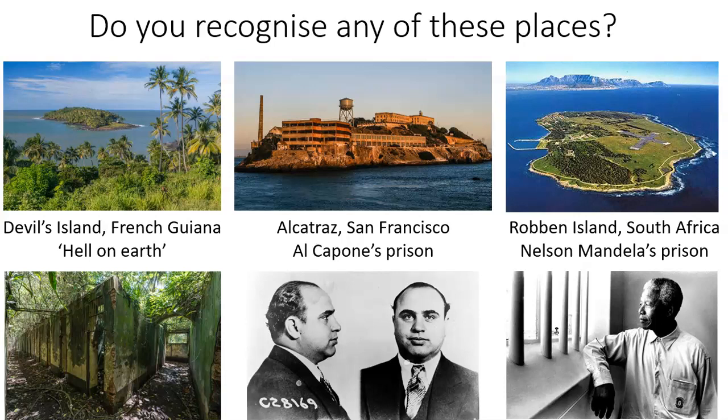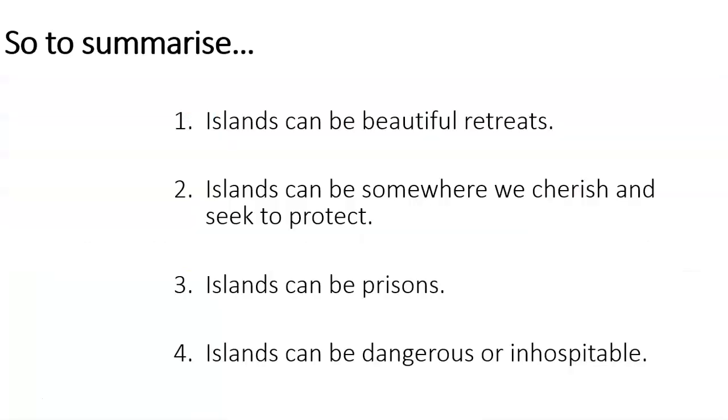And finally you've got Robben Island in South Africa — you may have got that one because you can see Table Mountain in Cape Town in the background. This, of course, was where Nelson Mandela was imprisoned during the terrible period of apartheid in South Africa. So we're starting to see lots of different ways of viewing what an island is, what an island can be, or what an island has been. Let's summarise then: islands can be beautiful retreats, somewhere we cherish and seek to protect — but they can also be prisons. Islands can be dangerous or inhospitable.